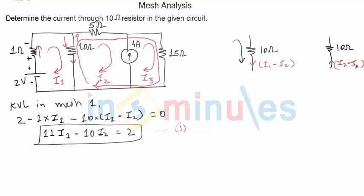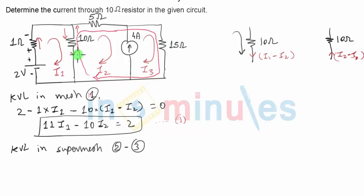Because it is not one single individual mesh, it is a combination of two meshes, we call it supermesh. So this whole thing becomes a supermesh. So the next step that we write is KVL in supermesh 2-3. So this is mesh 2-3 because it is a combination of mesh 2 and mesh 3. This was KVL in mesh 1. There was no current source being shared by any other mesh, so we could write it easily. So now let's see what will be KVL.